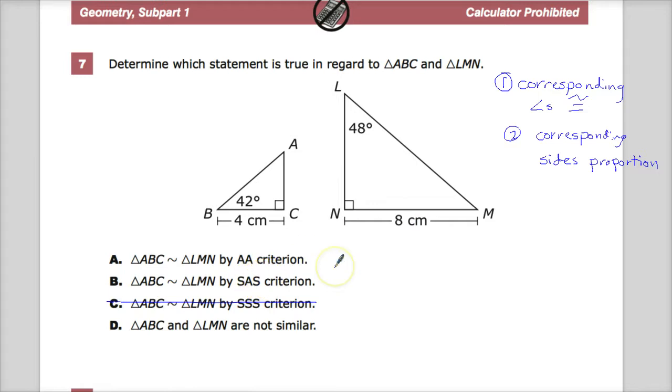Side, angle, side would be the two sides have a proportional relationship, and then the angle that's included, which means between them. So if I had this set up, and I knew this side was proportional to one over here, and this other triangle, and this one was proportional to this one, this angle would be the included angle. They would have to be congruent in order for them to be similar.